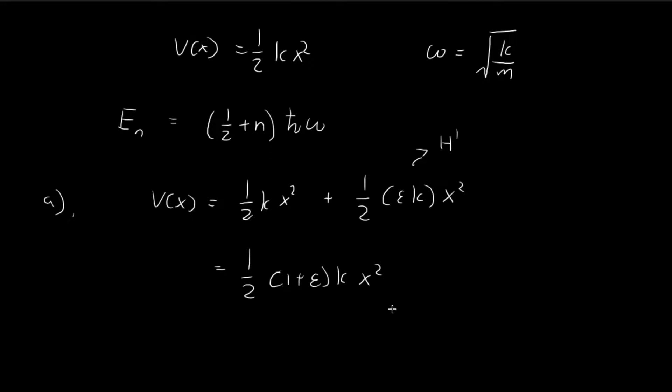The only difference is that the spring constant is different. So instead of k, we have one plus epsilon times k. And so that means the corresponding omega, let's say for this case it's called omega prime, is now equal to one plus epsilon k divided by m, which is just equal to omega times the square root of one plus epsilon. So now if you want to find the allowed energy levels for this potential, we can actually just use this formula directly, but instead of omega, we substitute in omega prime.